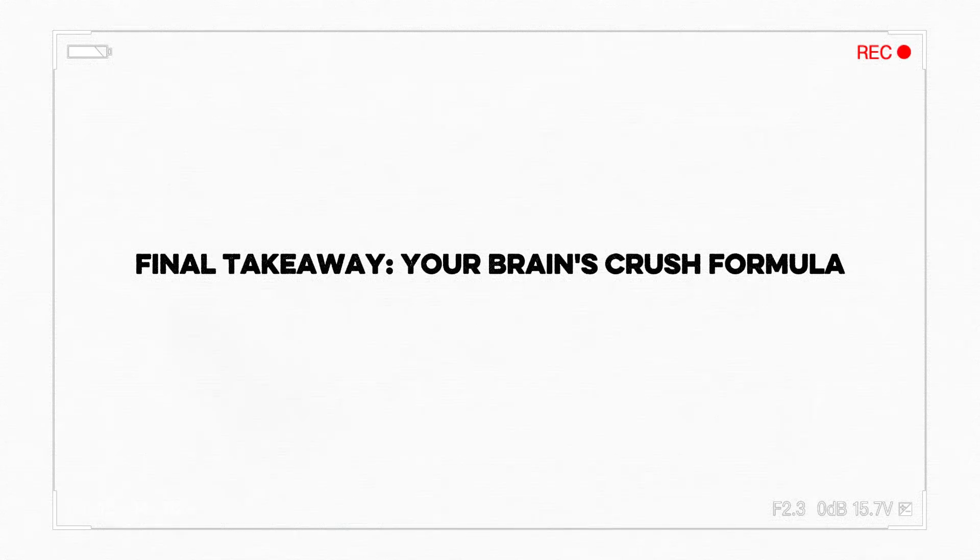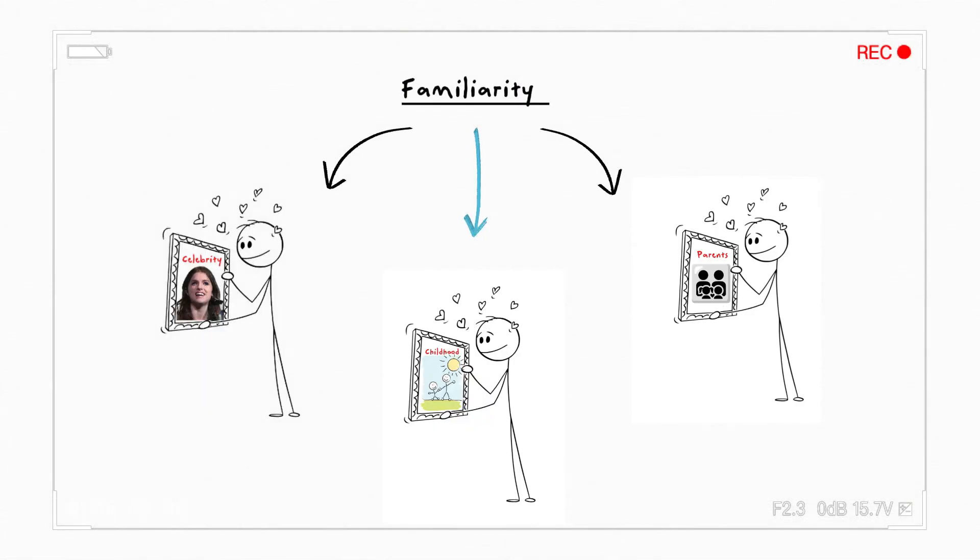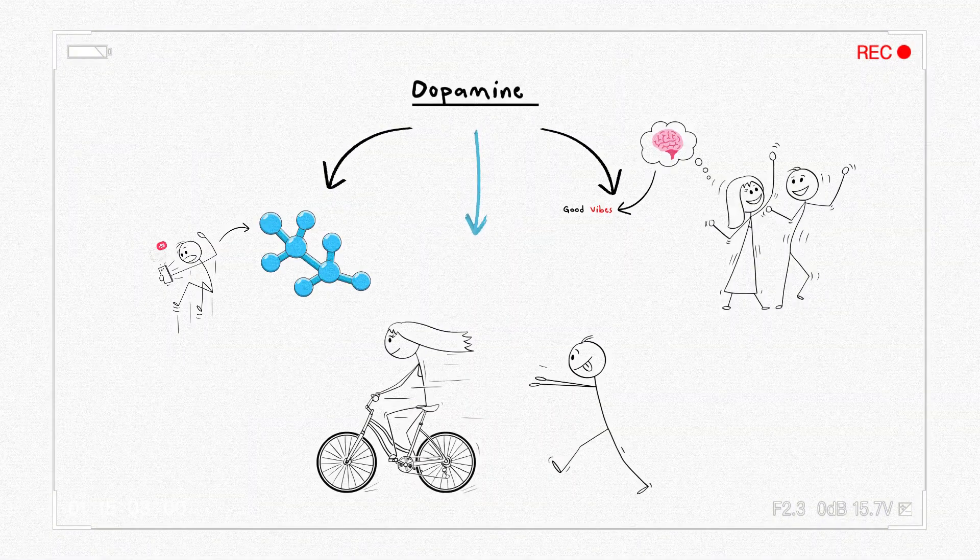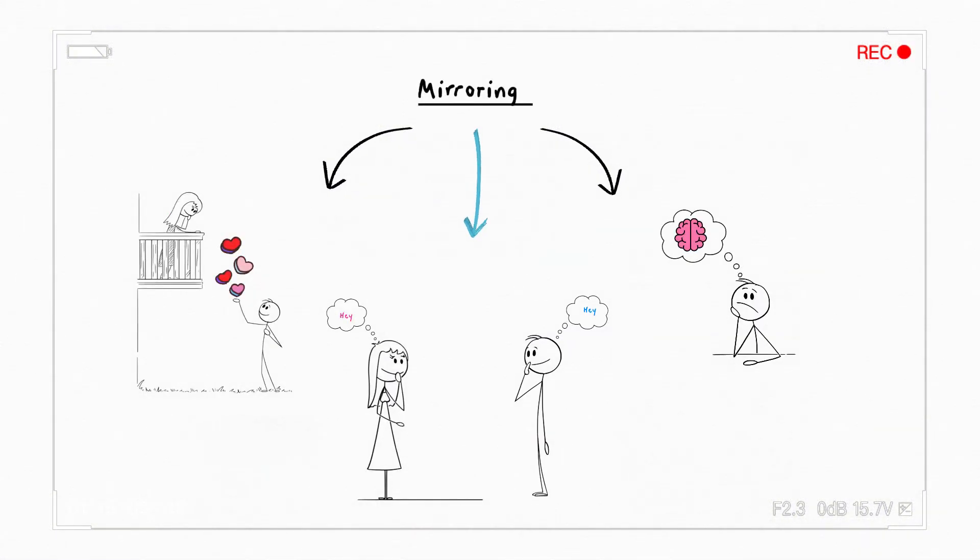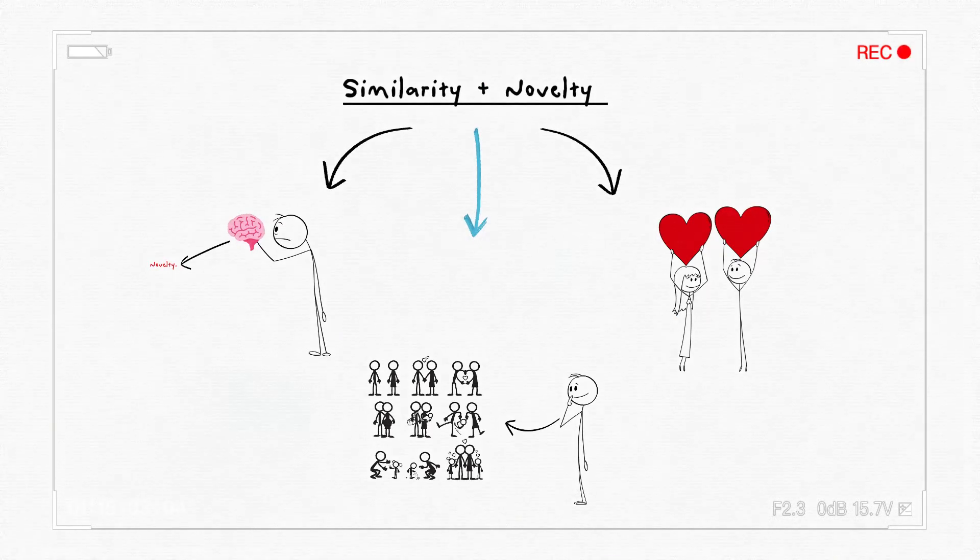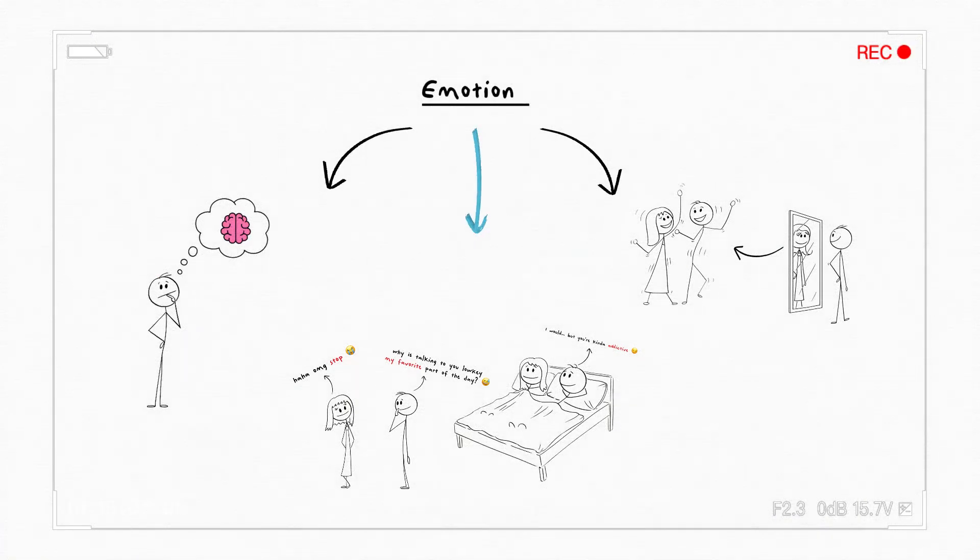Final takeaway. Your brain's crush formula. Let's break it down. Familiarity. You like what you've seen before. Dopamine. They make your brain light up. Mirroring. You vibe because you reflect each other. Similarity plus novelty. You match, but they surprise you. Emotion. They made you feel something.